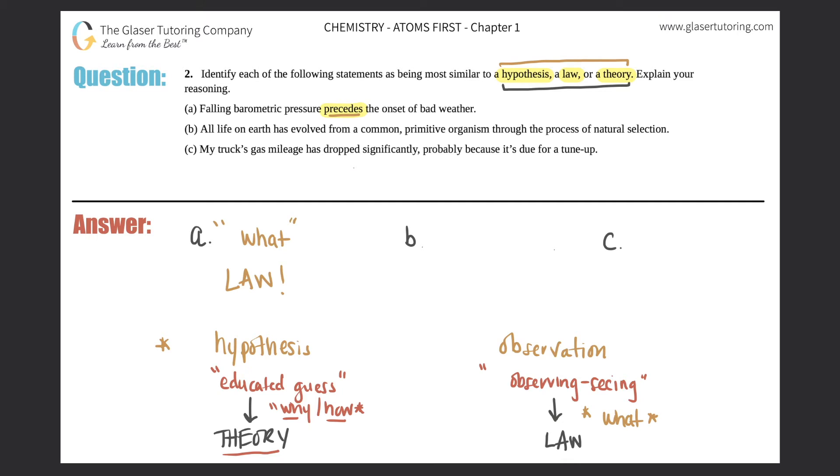So this whole idea of falling barometric pressure precedes, comes before, bad weather is a law, which means that time and time again, this falling barometric pressure keeps dropping and dropping every single time bad weather is going to come about. And that's why it's a law.